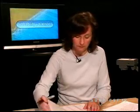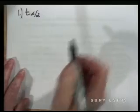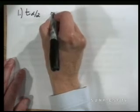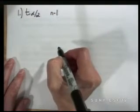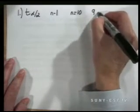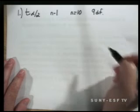There are three simple steps required to construct a confidence interval. The first step is to find the critical value, T alpha over 2. Before we do this, we must find the degrees of freedom. Degrees of freedom is based on n minus 1, where n is our sample size. We have a sample size of 10, which tells us that we have 9 degrees of freedom.